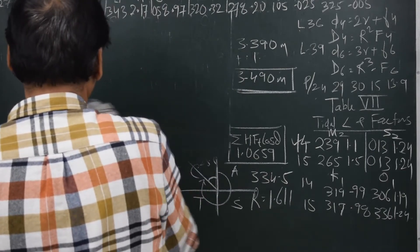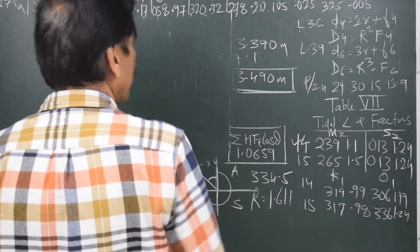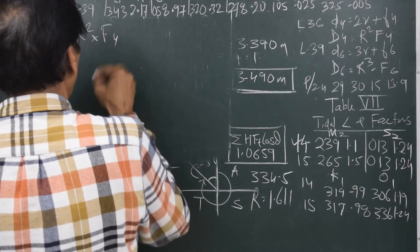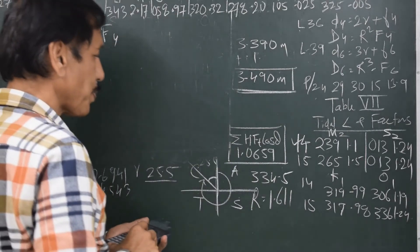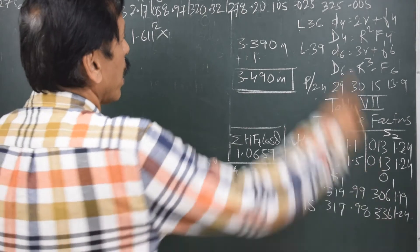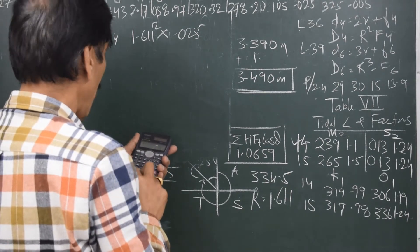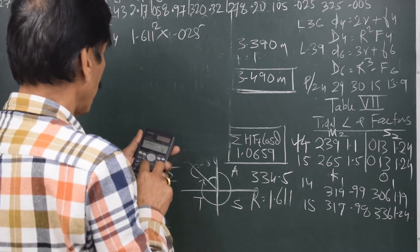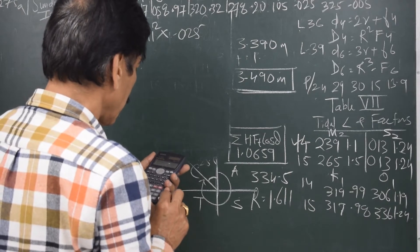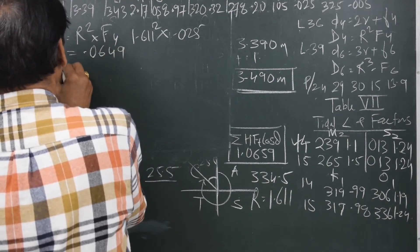The formulae that I had obtained from line 36 and line 39: line 36 says that capital D4 equals R squared times capital F4. So R squared is 1.611 squared times F4, which is 0.025. Let us see: capital D4 is 1.611 squared times 0.025, that is 0.0649.